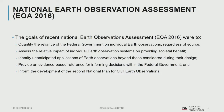The goals of the recent National Earth Observation Assessment, which occurred between 2014 and 2016, were to quantify the reliance of the federal government on individual earth observations regardless of their source — federal, state local, citizen science, etc. — to assess the impact on societal benefit, to look at unanticipated applications, and to provide an evidence-based reference for informing decisions and the development of the Second National Plan for Civil Earth Observations.